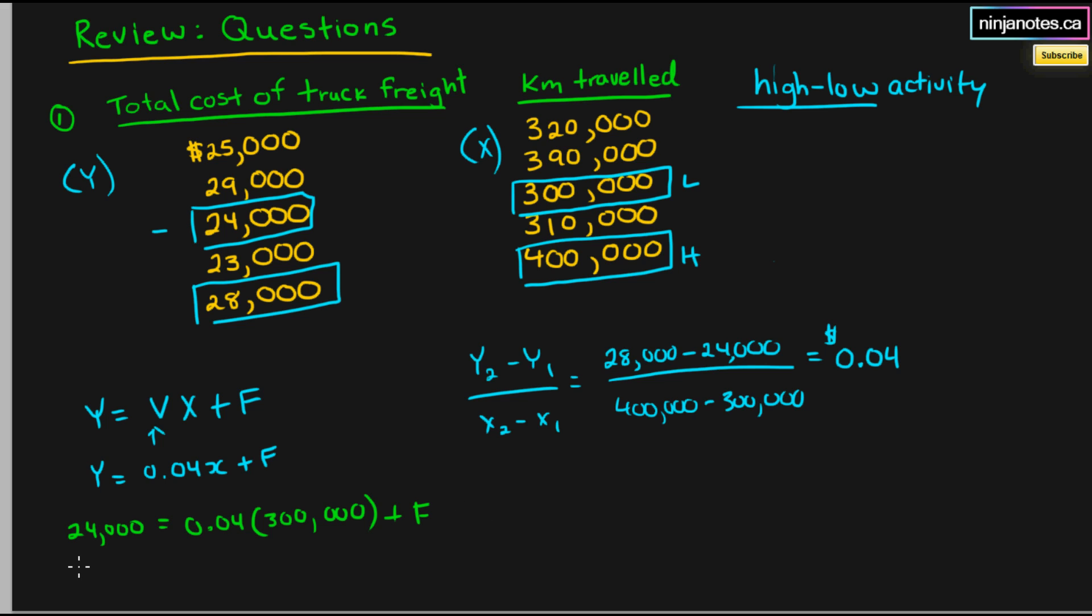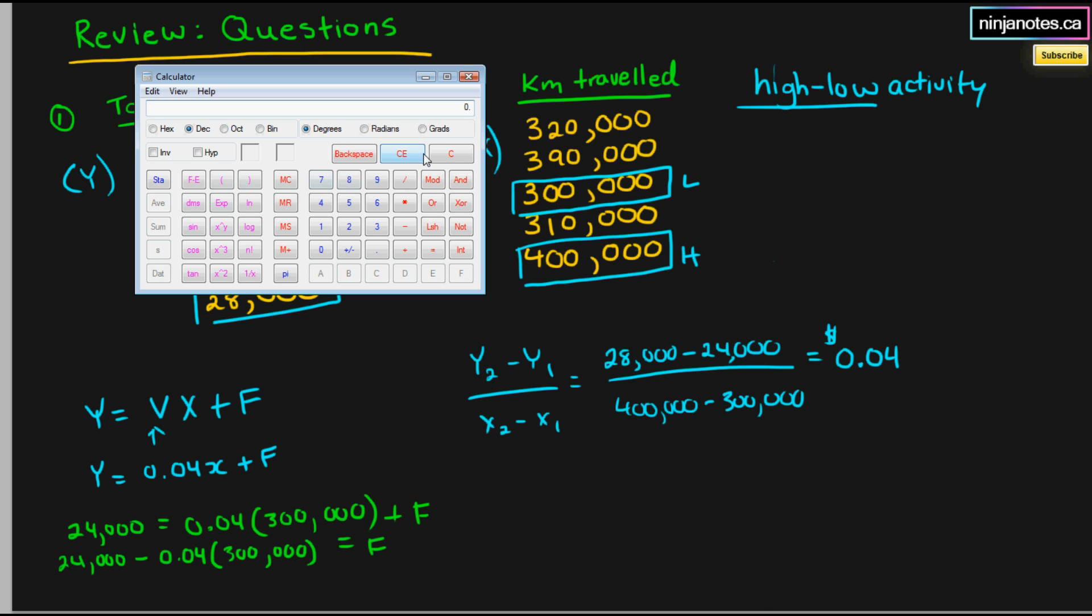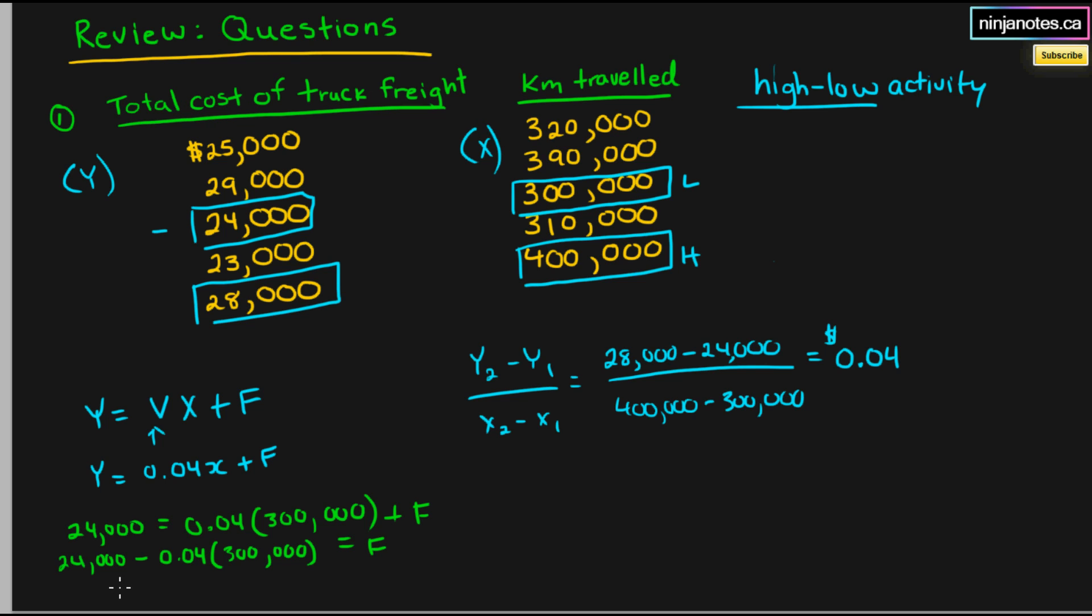We rearrange it. We can say 24,000 minus 0.04 times 300,000 is equal to f. And that should be, let's see what that is. 4 times 300,000 is 12,000. So our fixed cost is equal to 12,000.